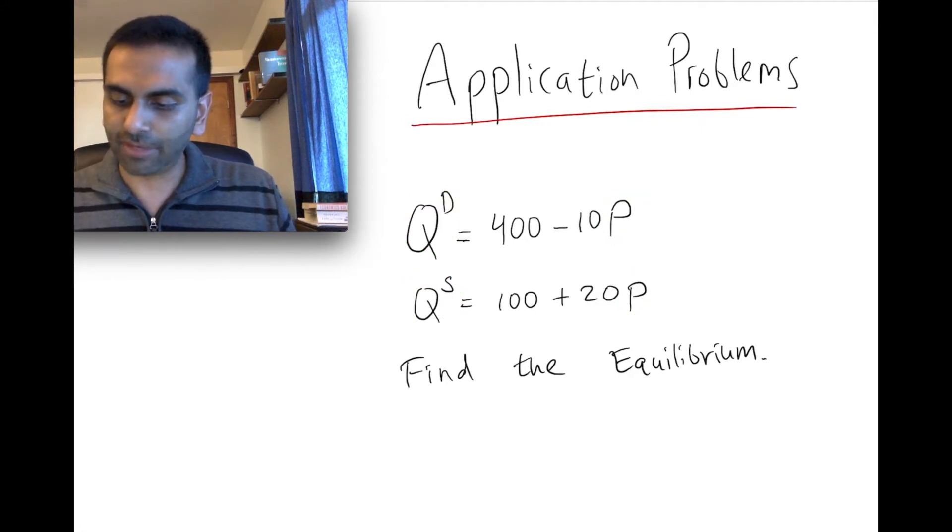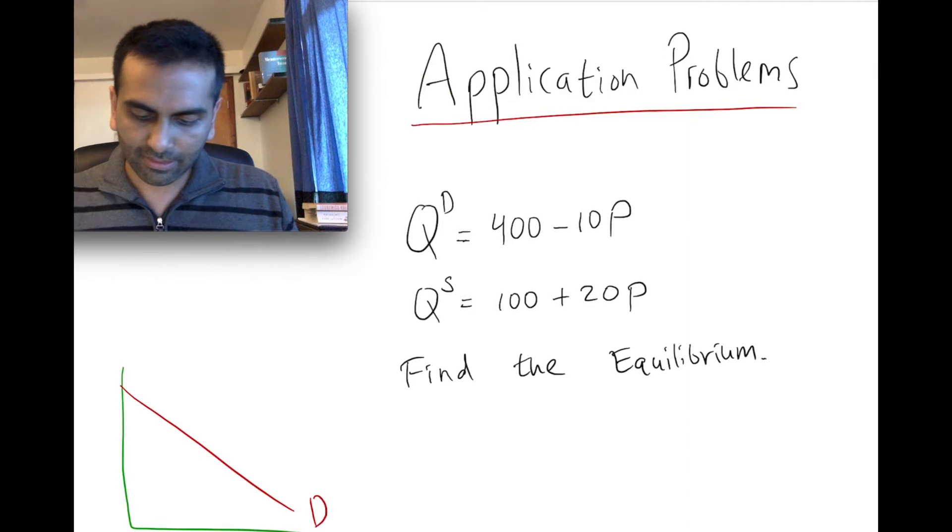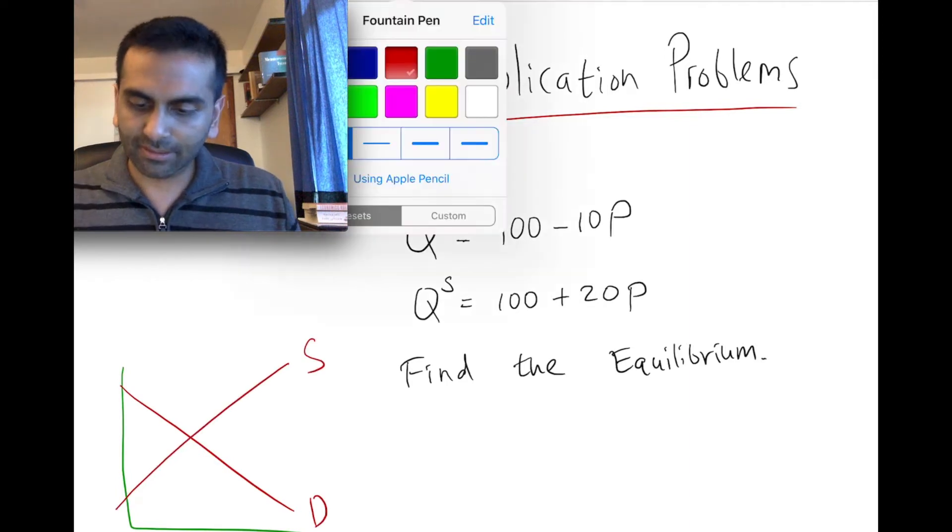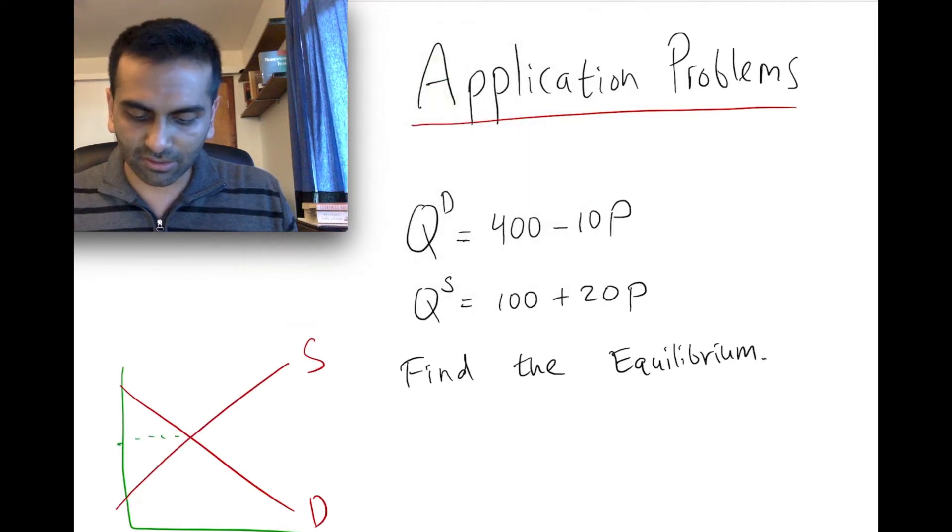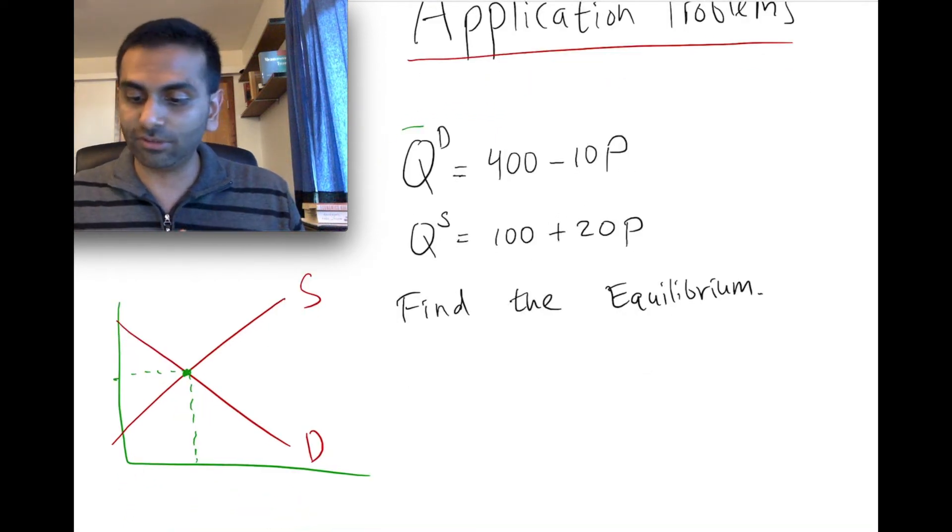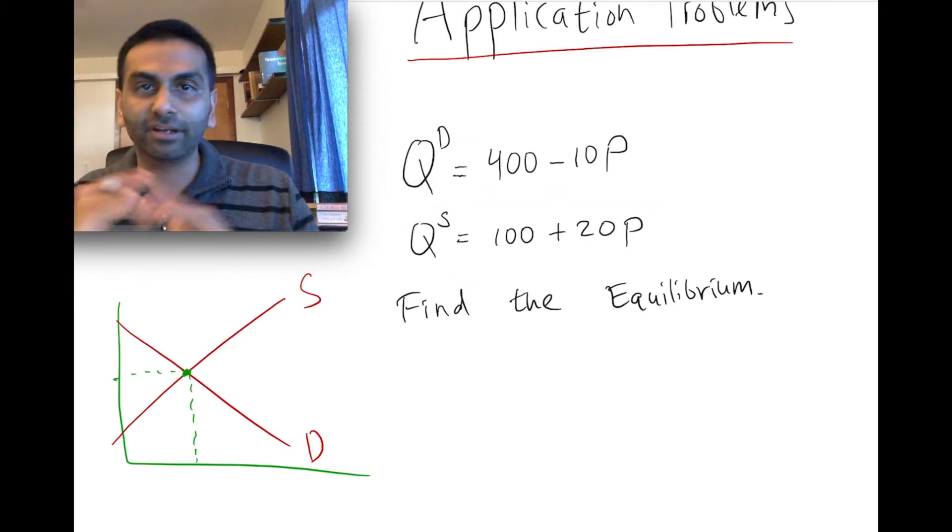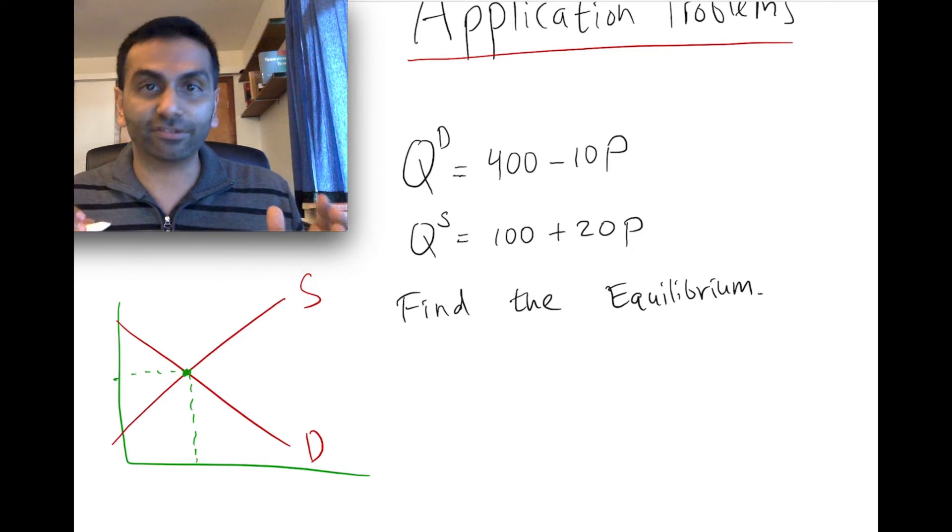And the equilibrium, if you were to graph out the supply and demand curve, the equilibrium is just talking about the intersection. So really, it's no different than just saying find the point where these two mx plus b lines intersect, and we're going to solve it the same way we'd solve any other system of equations.